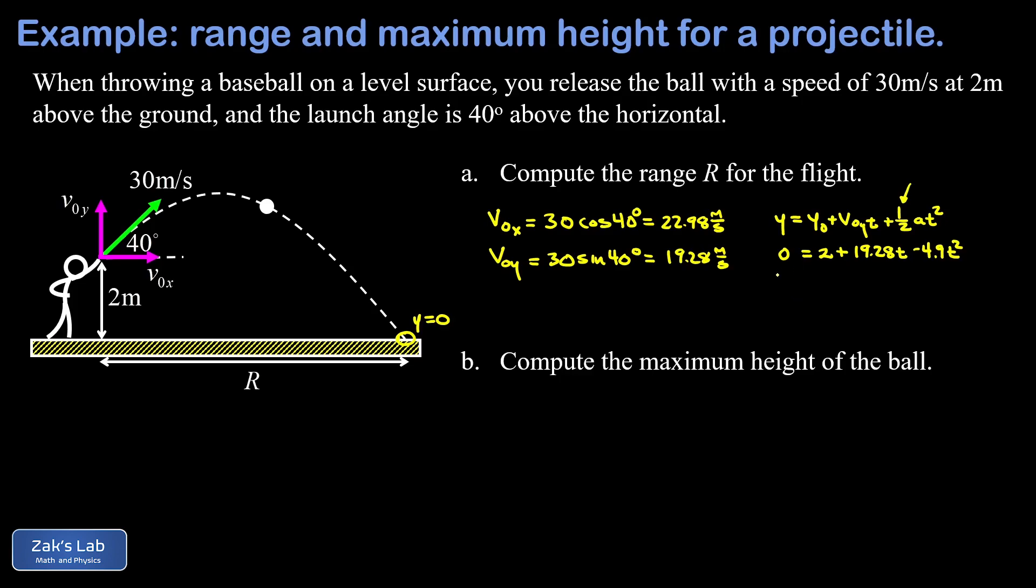Now this gives us a quadratic equation and you can plug in all the coefficients to the quadratic formula or plug into a quadratic solver in your calculator or even just type it into a Google search window to get the results here. One of the times you get out of this is negative and we're going to ignore that one. The positive time we get, that's a flight time of 4.04 seconds. All right, so now we know how long the ball stays in the air and we know from the beginning how fast it's moving to the right. It's going to keep moving at that same speed of 22.98 meters per second to the right the entire time because there's no x acceleration in a projectile motion problem.